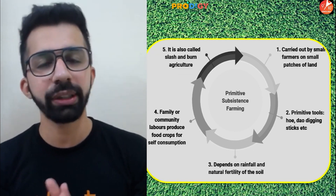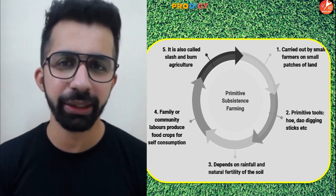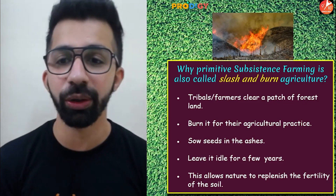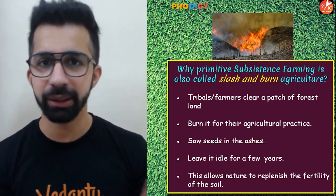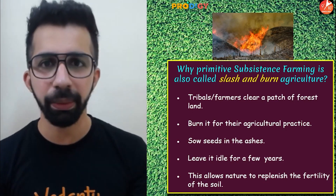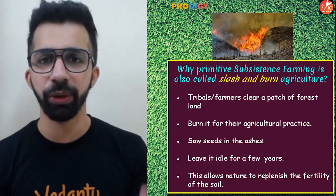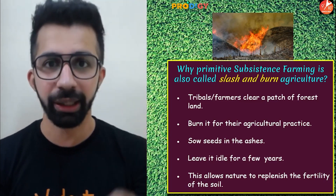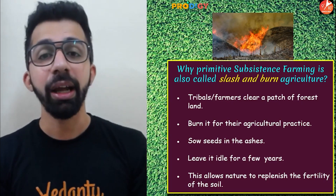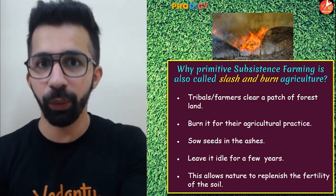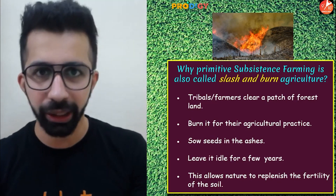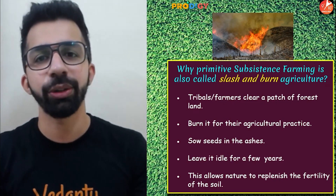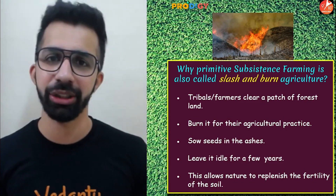Primitive subsistence farming is also called slash and burn agriculture. In this practice, farmers clear a patch of forest by burning the plants and woodland to create a field, known as 'swidden'. The burnt plants provide nutrients to the soil, on which they carry out agriculture. Once the fertility of the soil reduces, they move to another piece of land.